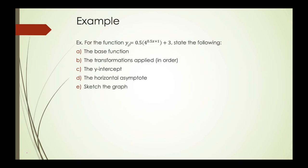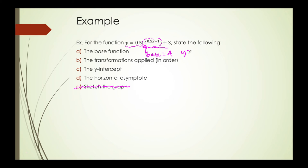Let's look at one last example. We're given an exponential function and asked to find the base function, the transformations, the y-intercept, and the horizontal asymptote. For time's sake, I'm just going to focus on those parts. The base function — we can easily find that by looking at the power and identifying the base, which in this case is 4. So our base function is y is equal to 4 to the x.